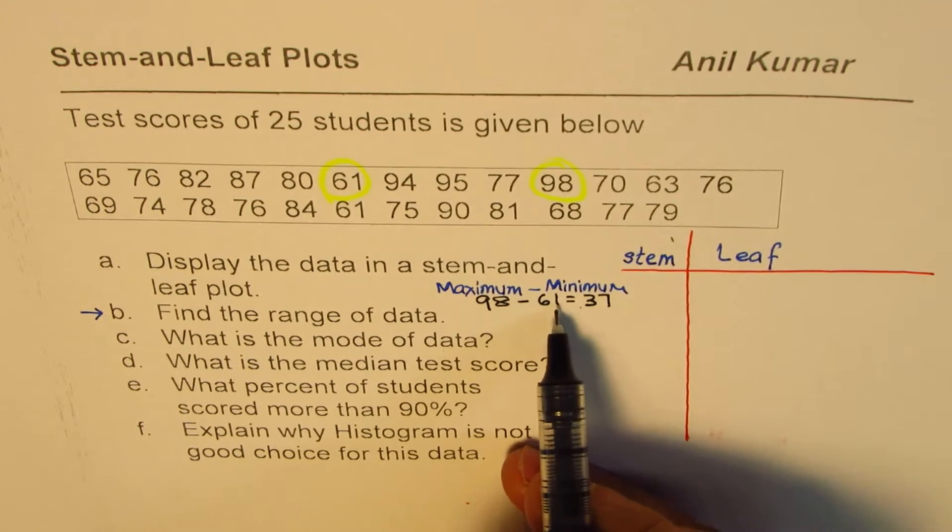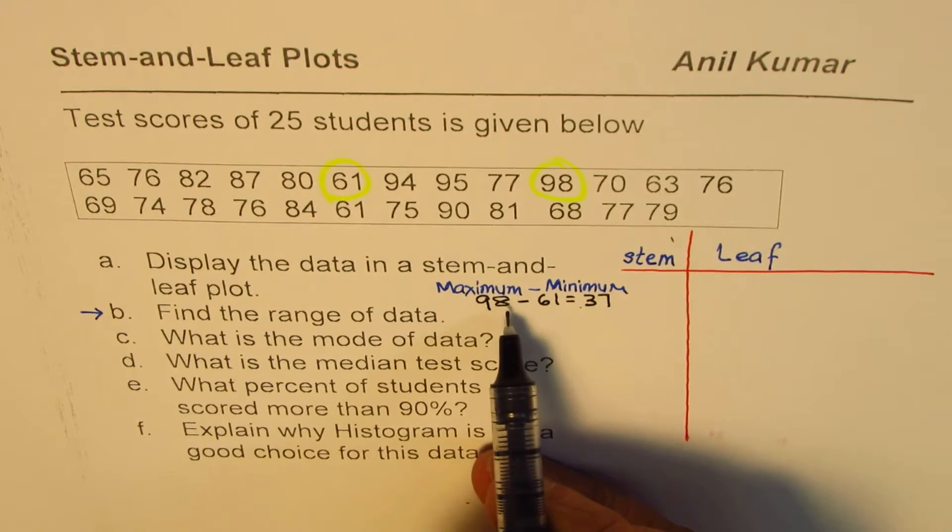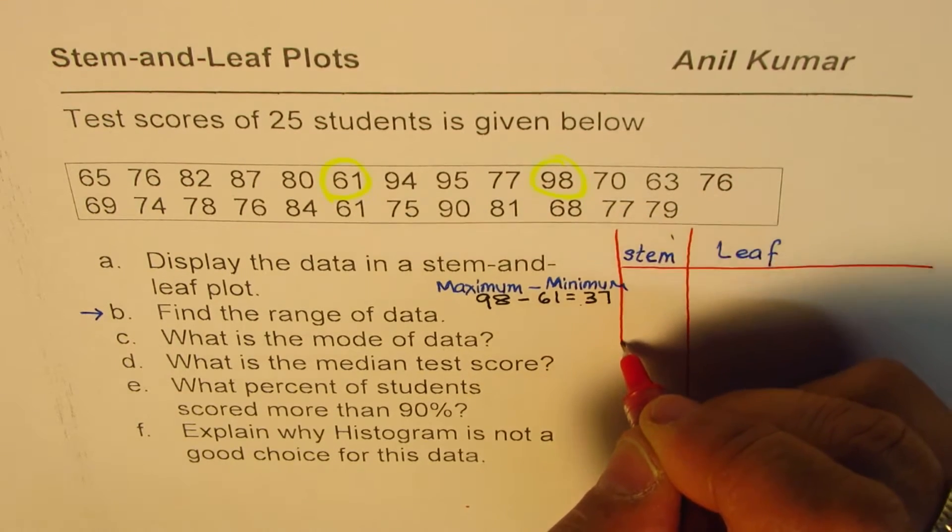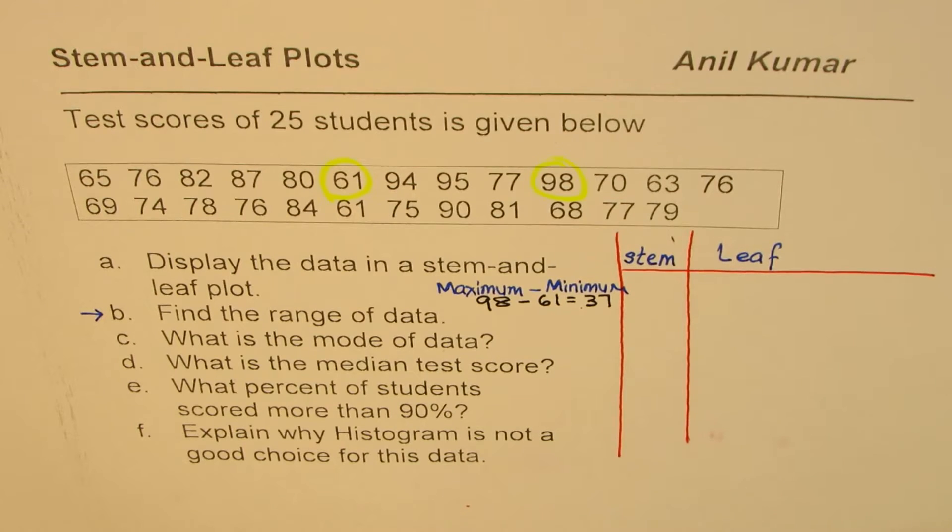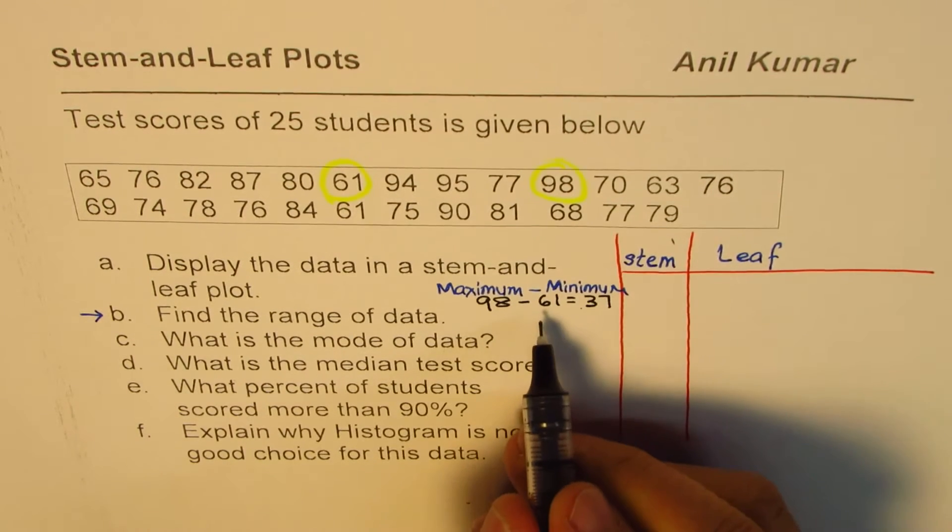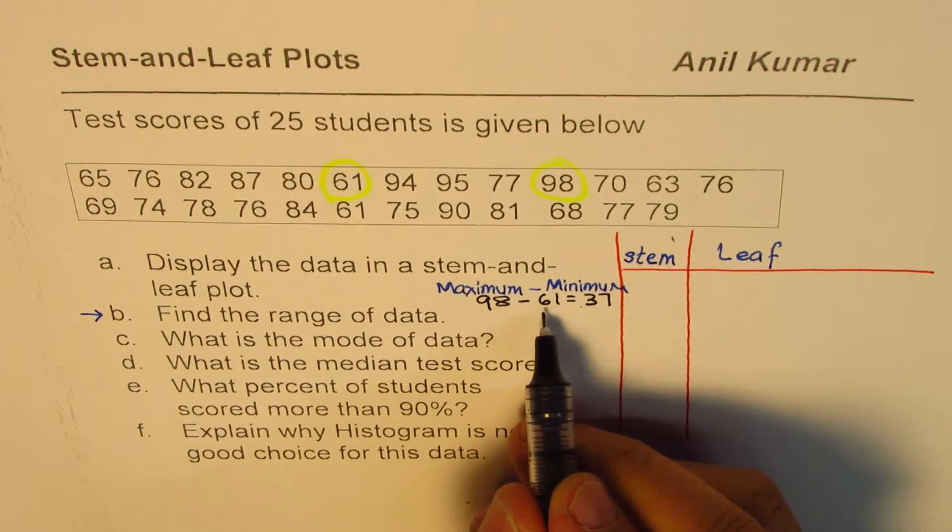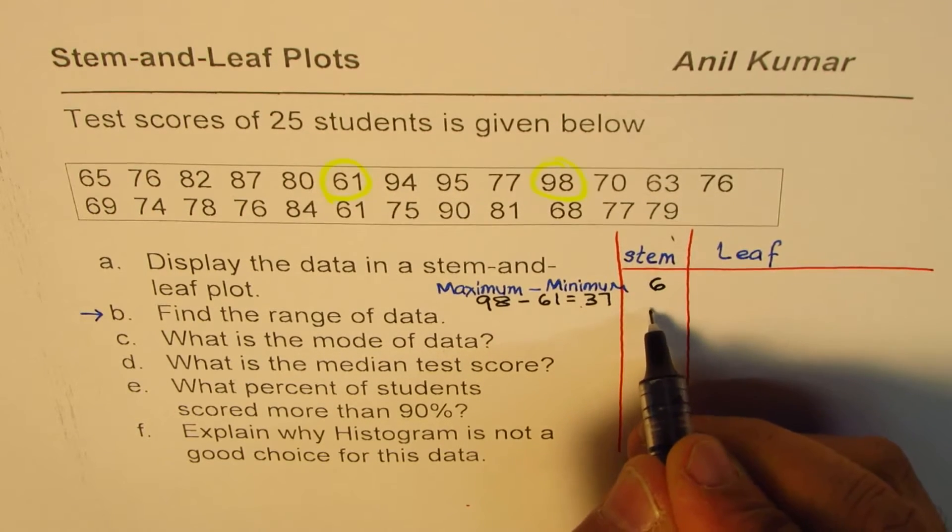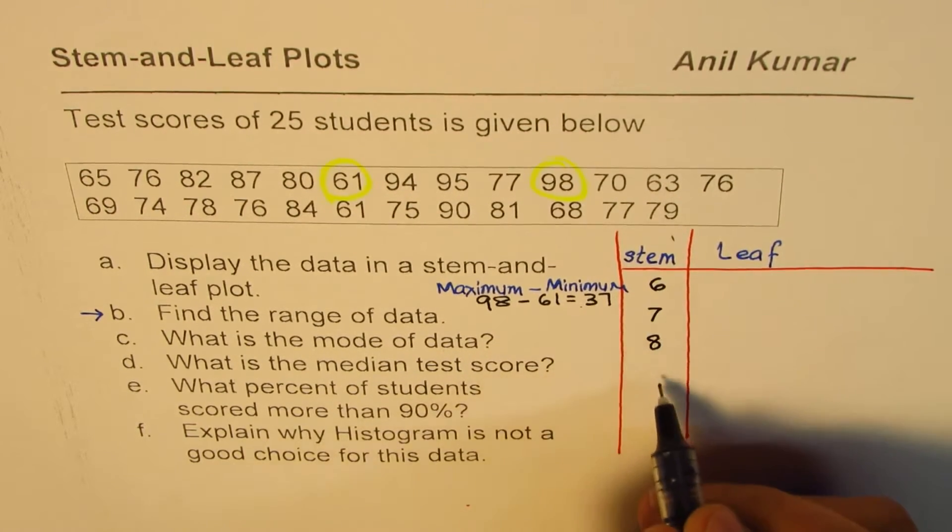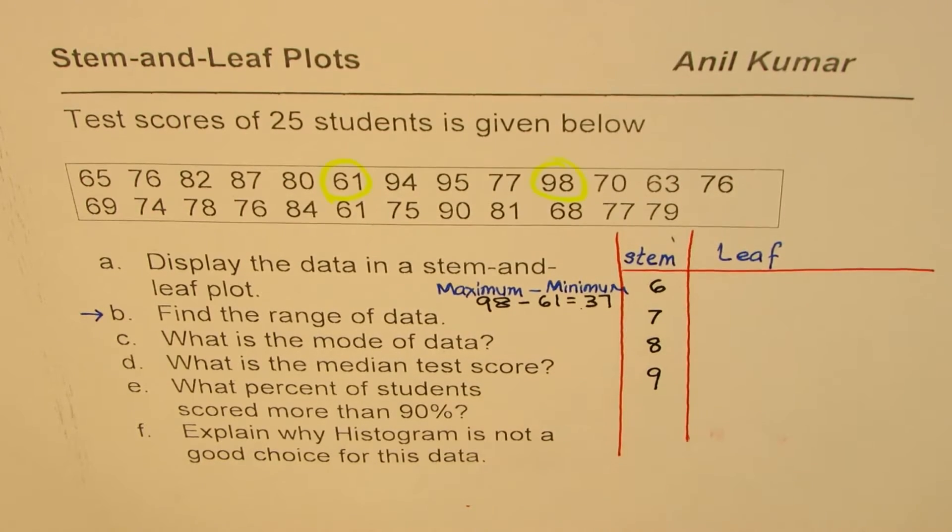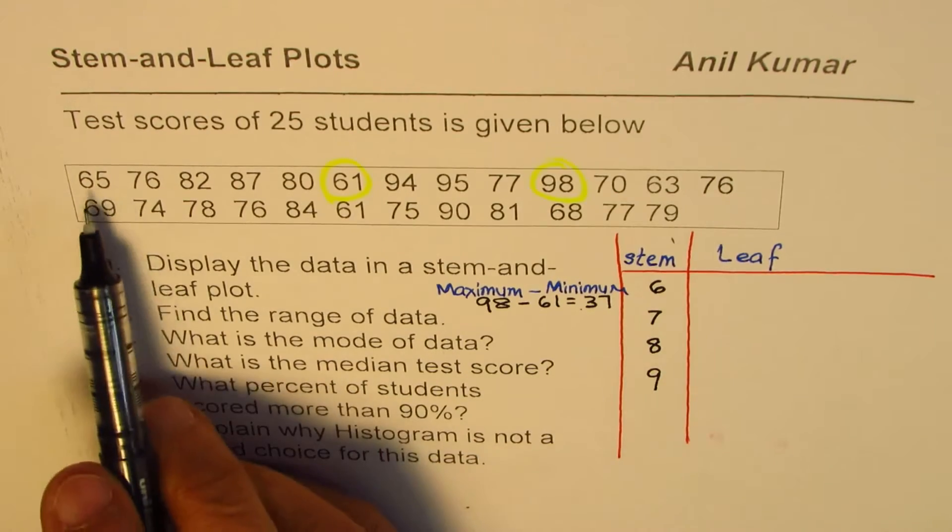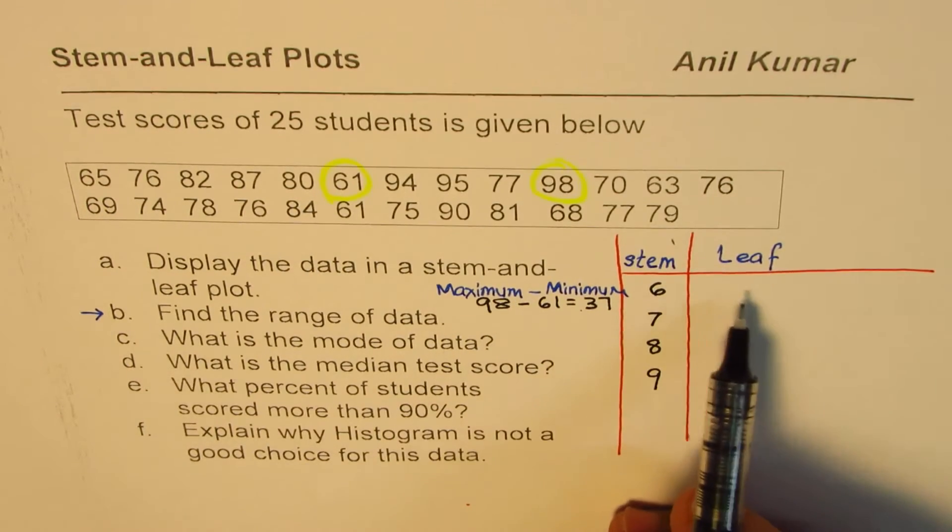Now you have also seen that the numbers actually start from 61 and end at 98. So in the stem part, what do you expect? We expect 60s, 70s, 80s, and 90s. So we can write down 6, 7, 8, and 9 to begin with. That's why we went to part B first. Now we'll read the numbers and write down their counterparts on the leaf part.